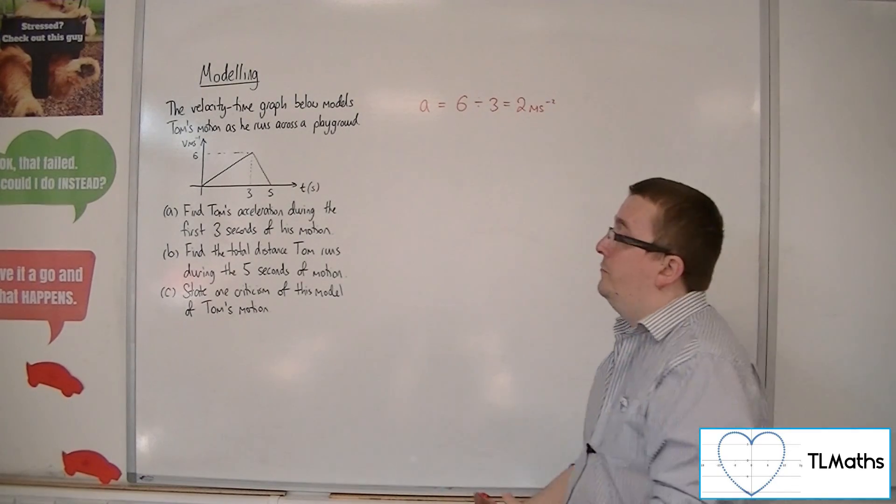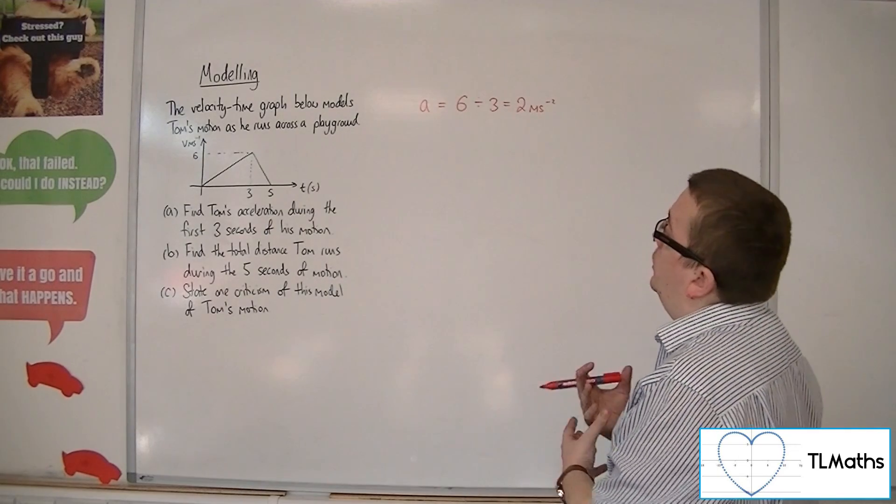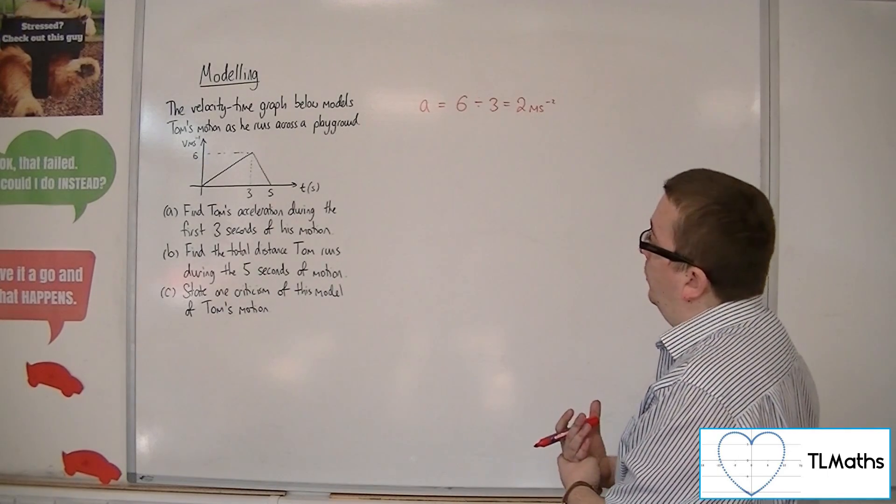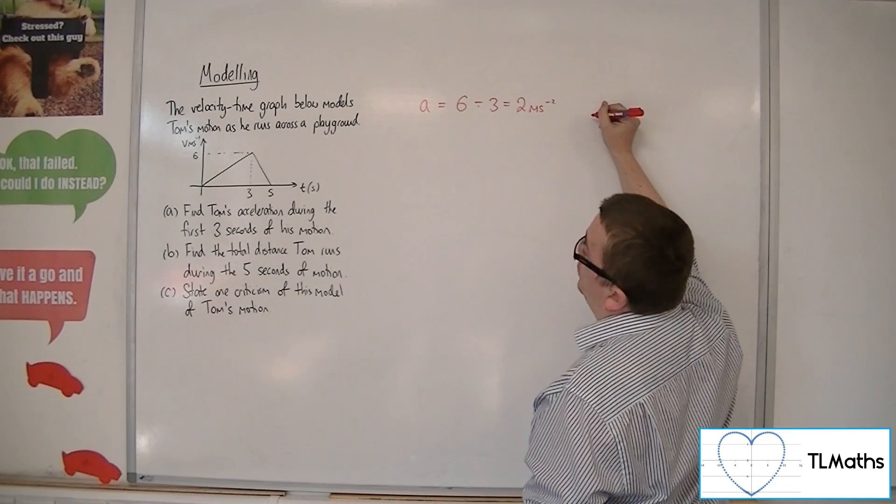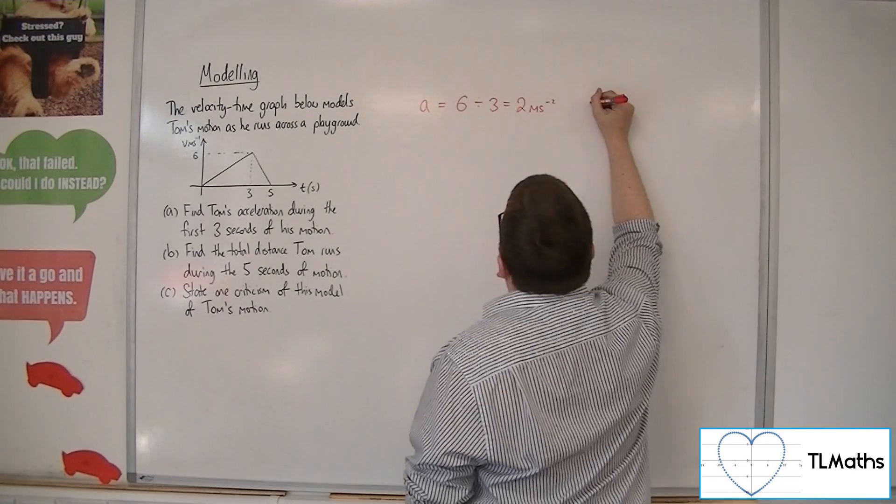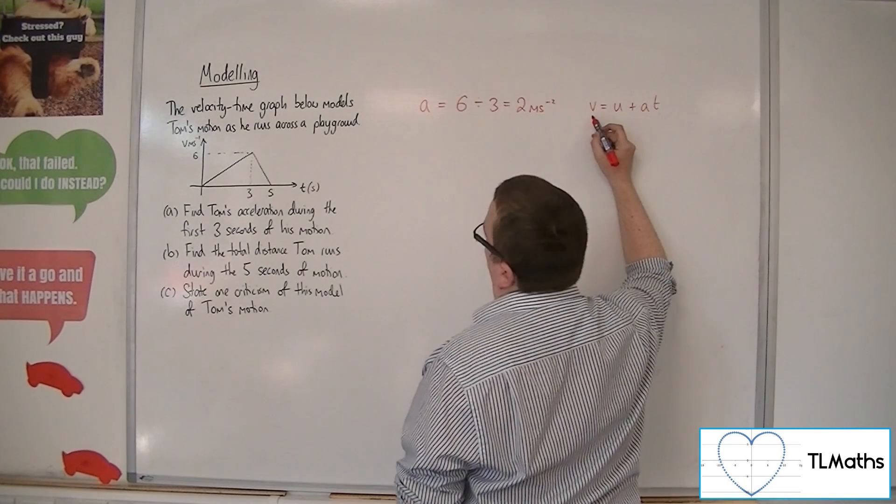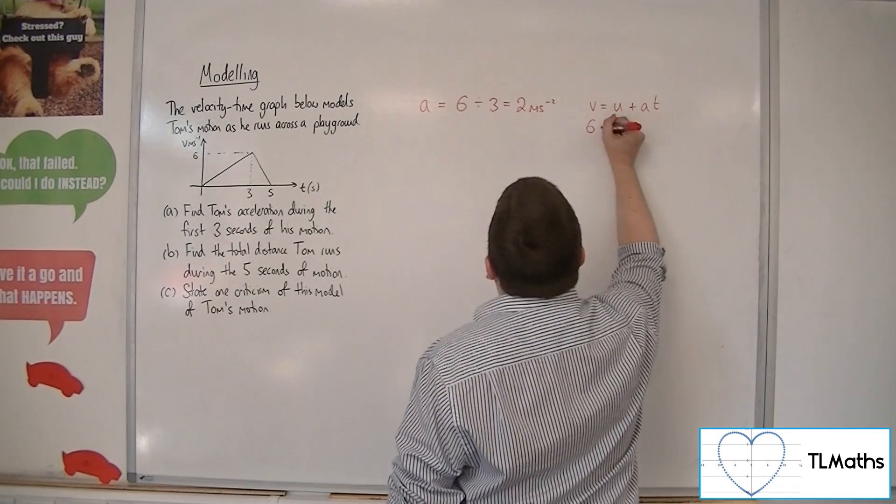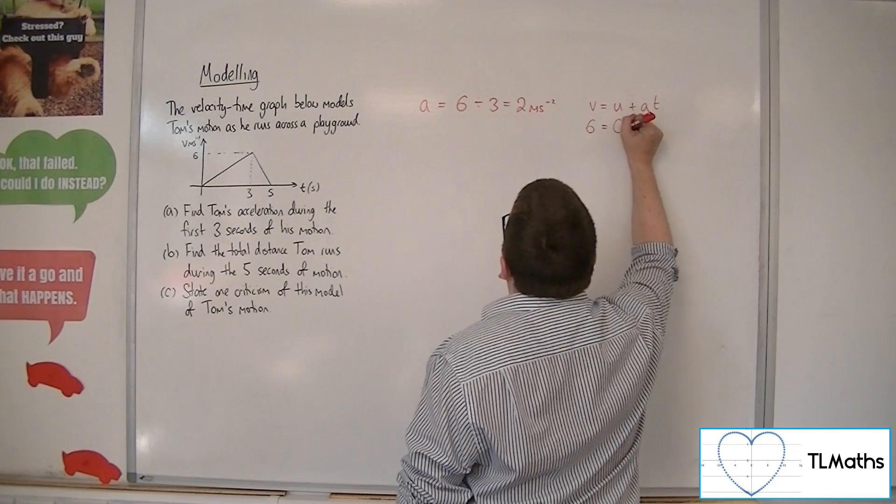You can calculate it using V equals U plus AT as well. So you can think of it using the constant acceleration equation. V equals U plus AT. V is the final velocity, which we know is 6.